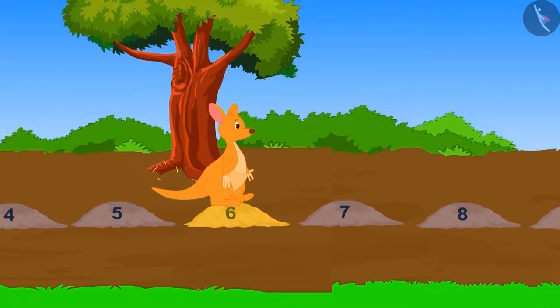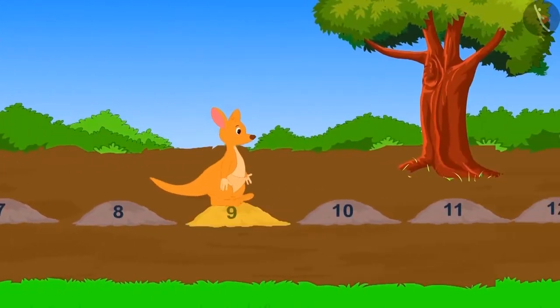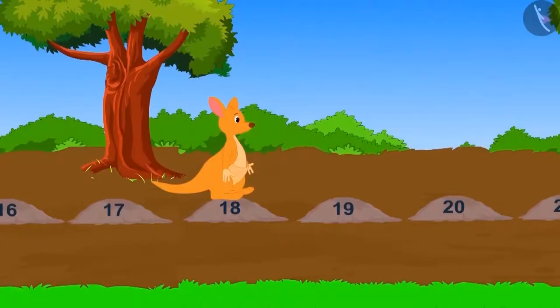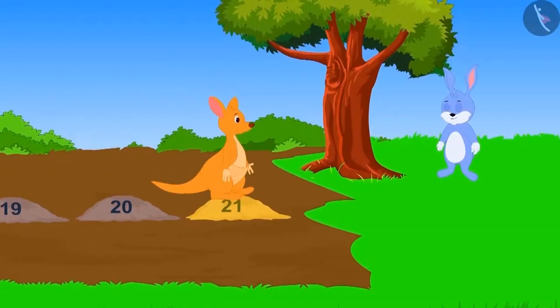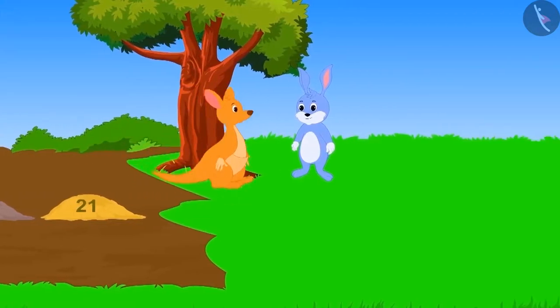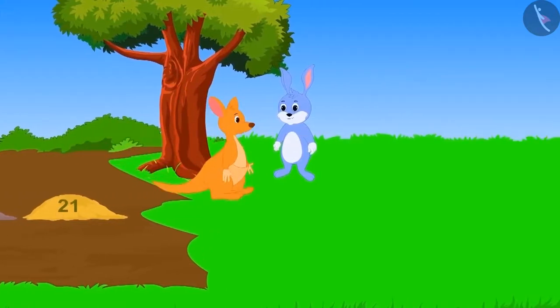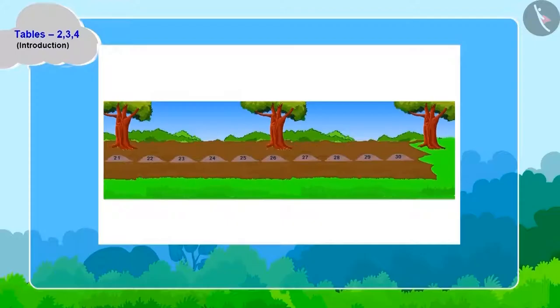Now, kittu will reach which stone after taking the third jump? On the ninth stone. Kittu reached the twenty-first stone in his seventh jump, got down from there and crossed the swamp easily. Children, can you tell that if kittu could take the eighth, ninth and tenth jump, which stone would he reach? On twenty-fourth, twenty-seventh and thirtieth stone.